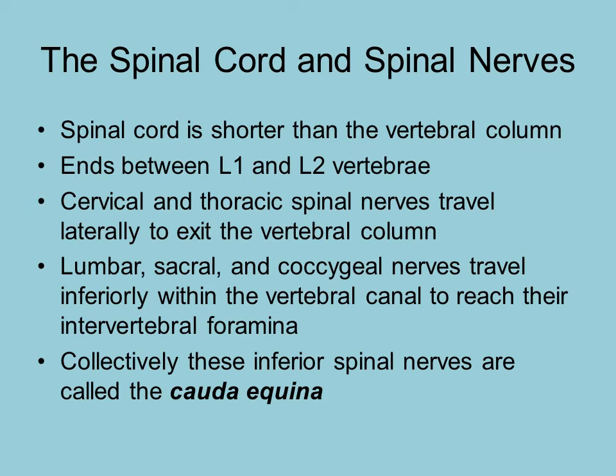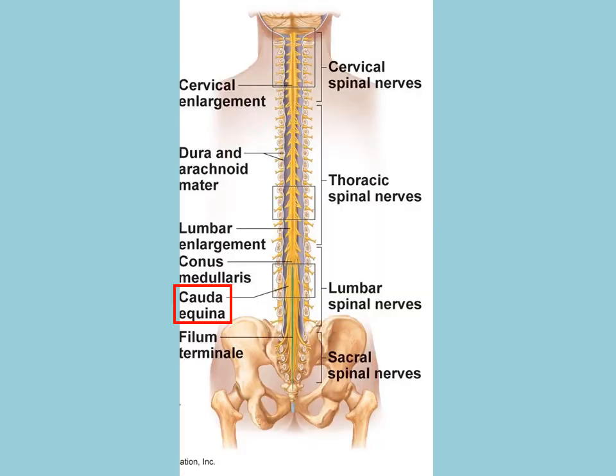The spinal cord itself ends between L1 and L2. The lumbar, sacral, and coccygeal nerves travel within the vertebral column to reach the intervertebral spaces further down. Those spinal nerves traveling in the vertebral column below the end of the spinal cord are referred to as the cauda equina, because all the strands together look like a horse's tail.